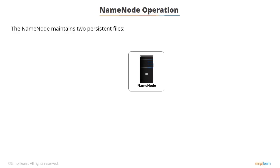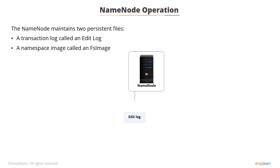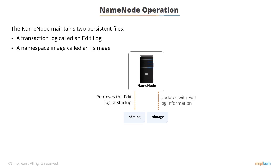Name node maintains two persistent files: a transaction log called an edit log, and a namespace image called an FS image. The edit log records every change in the file system metadata, such as creating a new file, and is stored in the name node's local file system. The entire file system namespace, including mapping of blocks, files, and file system properties, is stored in the FS image. When new data nodes join a cluster, metadata loads the blocks into memory at startup and periodically at user-defined intervals. When the name node starts up, it retrieves the edit log and FS image, updates the FS image with edit log information, and stores a copy as a checkpoint. The metadata size is limited to the RAM available on the name node.